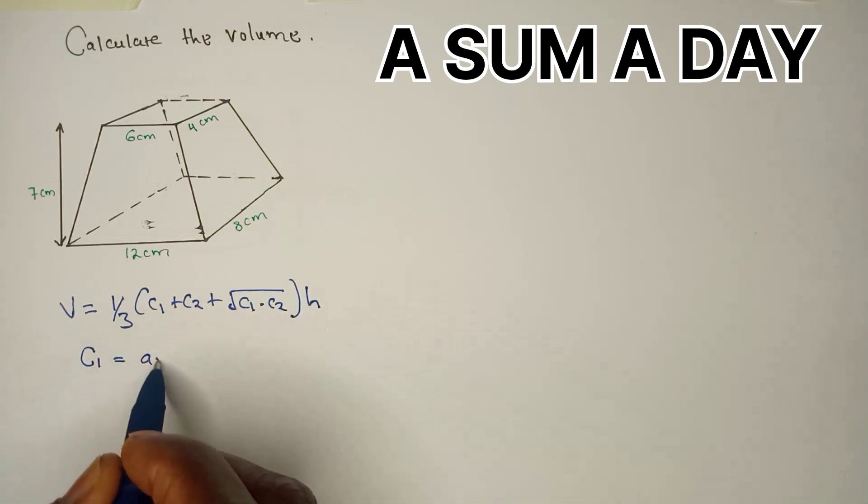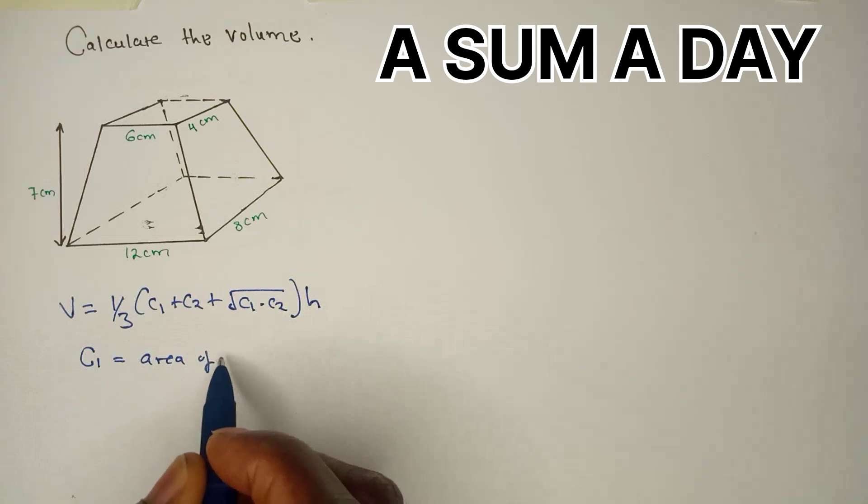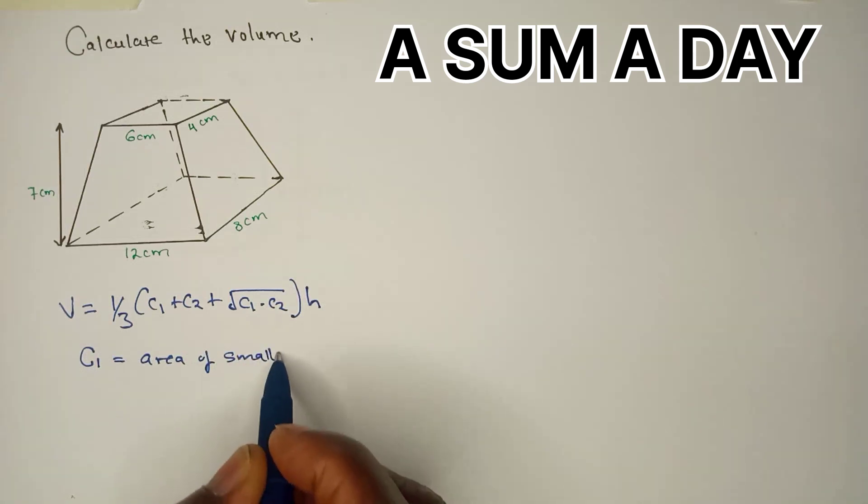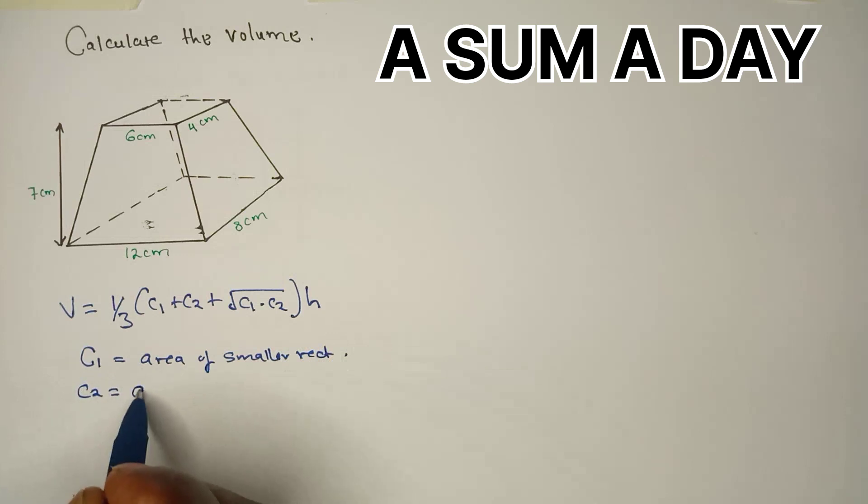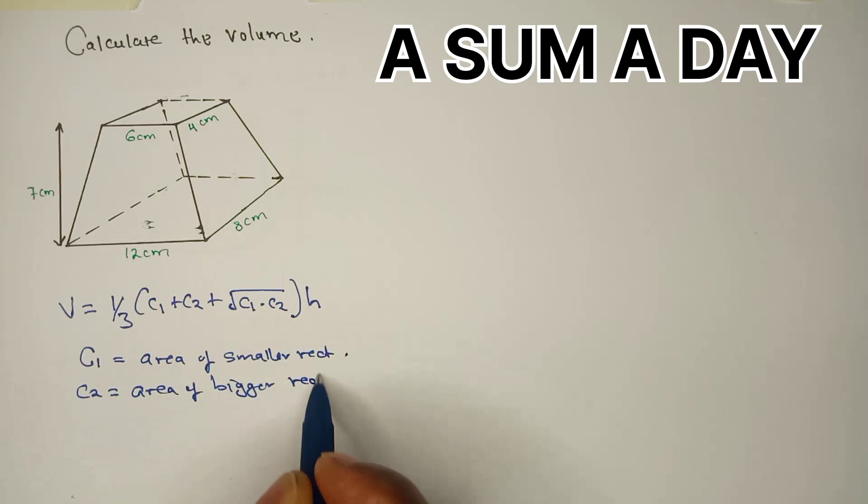C1 is the area of the smaller rectangle. C2 is the area of the bigger rectangle. And then height is the height of the frustum.